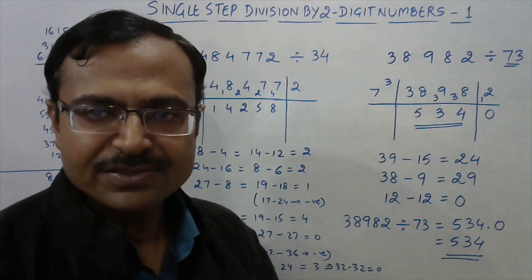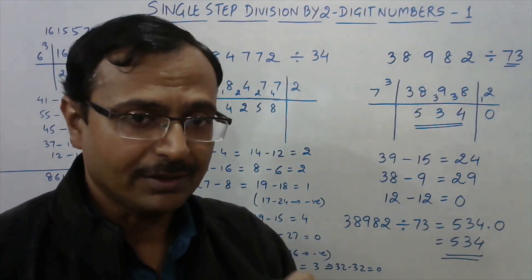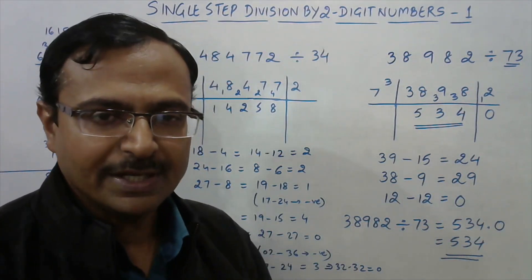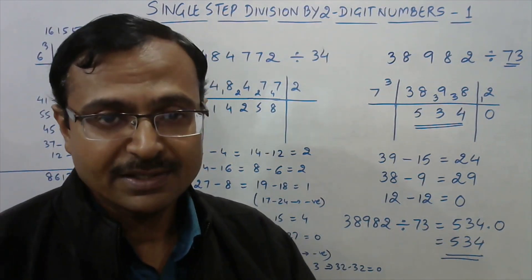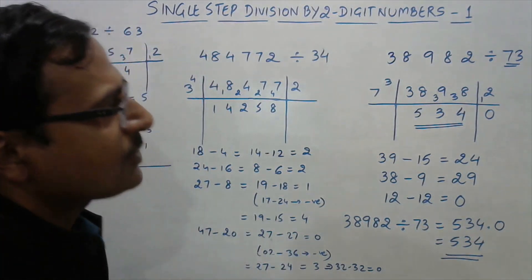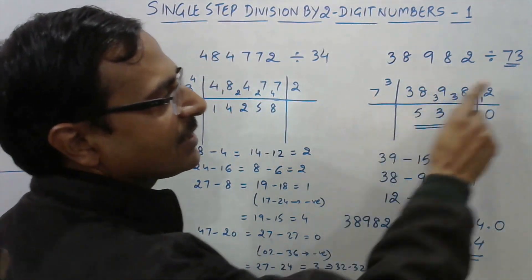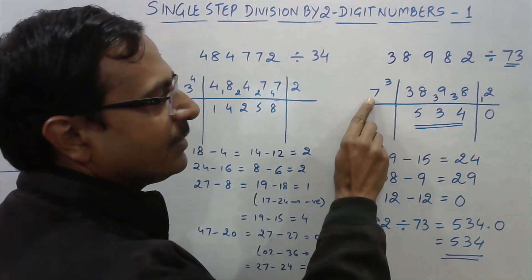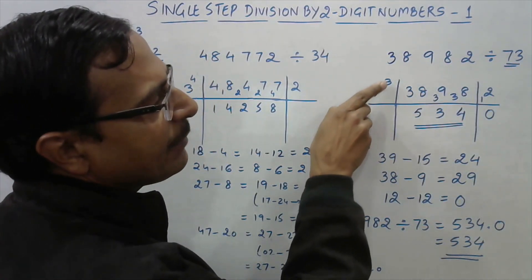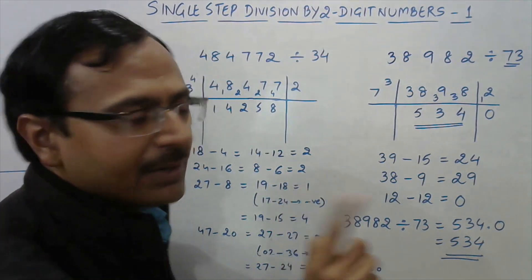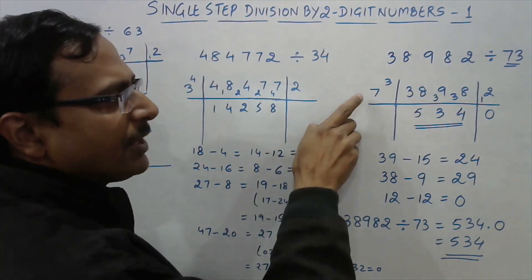The first example is 38982 divided by 73. I have done the steps here so that you do not get confused. Now, this is a two-digit number, so I am writing the first digit — that is the tens digit — here, and the second digit, the ones digit, is written slightly above. Remember, this is not 7 raised to the power 3; it is just done to separate out 7 and 3.